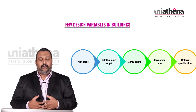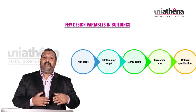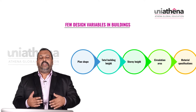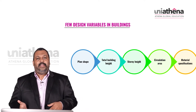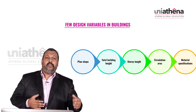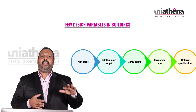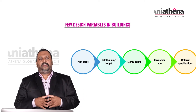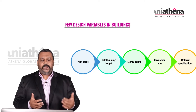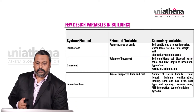Then you have your circulation area — depending on the circulation area requirement, the cost is going to vary. Then you have your material specification: what type of materials do you want to use? Whether you use high-end advanced materials or lower quality materials, the cost will differ accordingly. So all these — plan shape, total building height, storey height, circulation area, and material specifications — are the design variables for buildings.